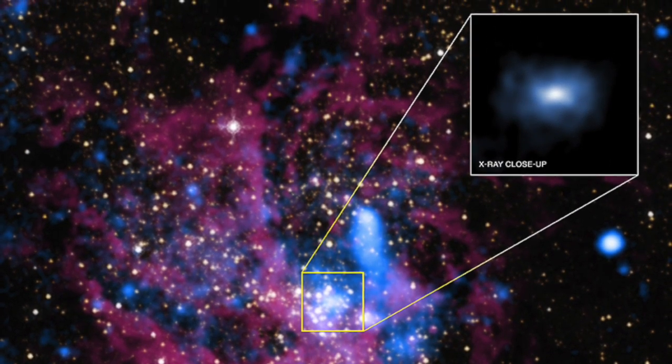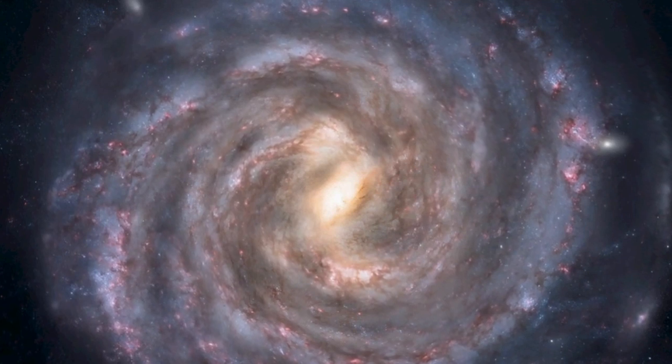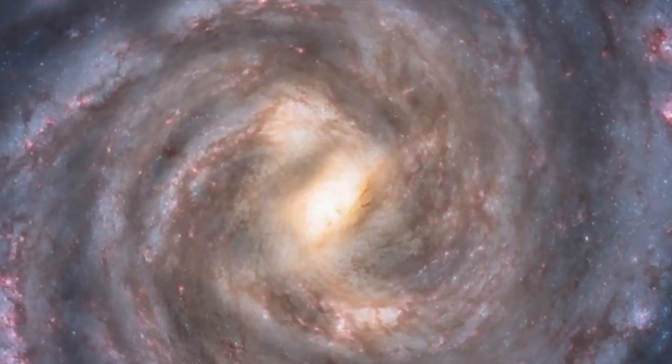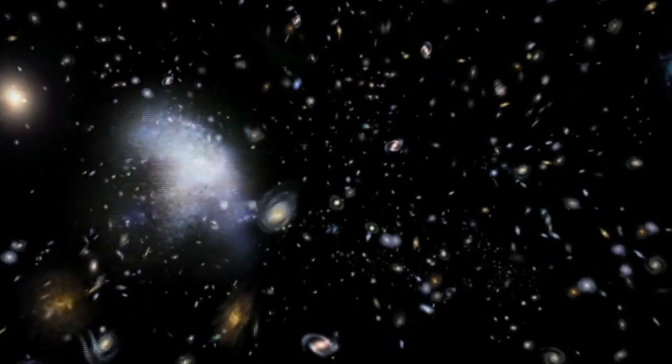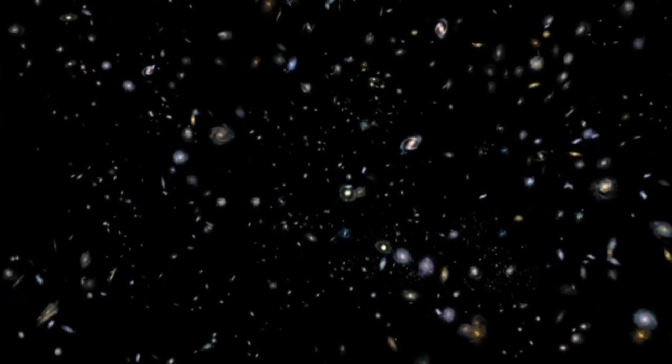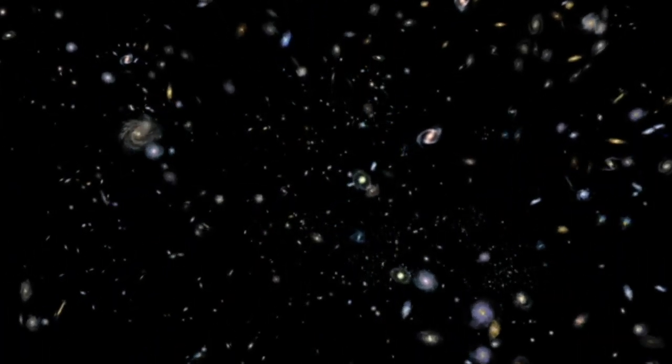Scientists call Sagittarius A a supermassive black hole, which is the largest type of black hole astronomers have found. We see them in the center of galaxies, and observations to this point suggest nearly all large galaxies contain one.